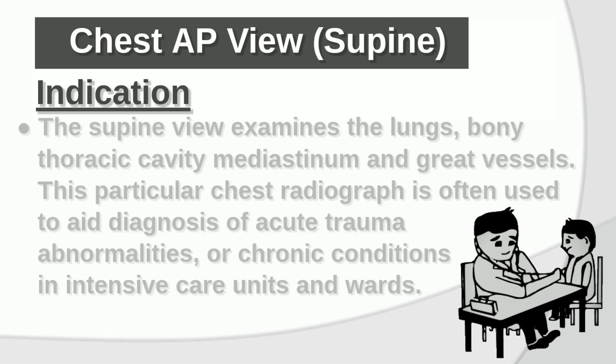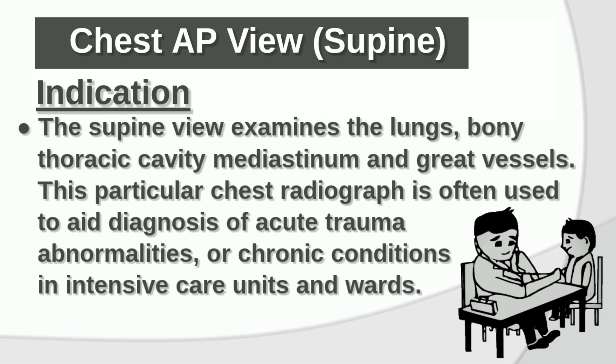Indications: The supine view examines the lungs, bony thoracic cavity, mediastinum, and great vessels. This particular chest radiography is often used to aid diagnosis of acute trauma abnormalities or chronic conditions in intensive care units and wards.